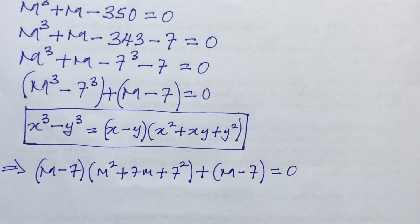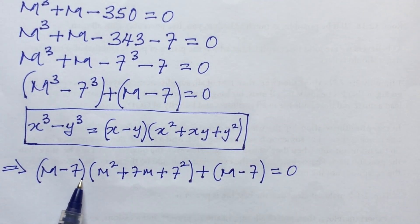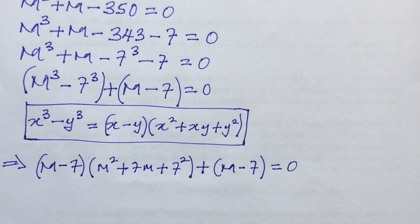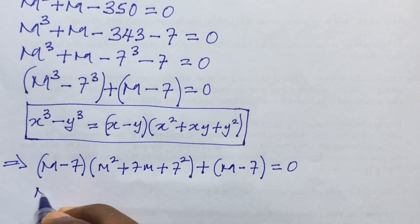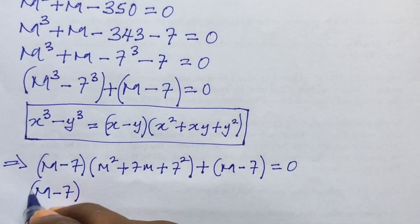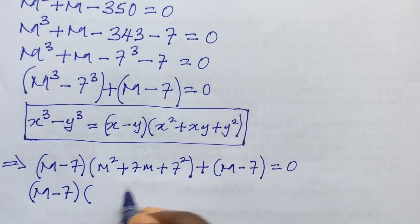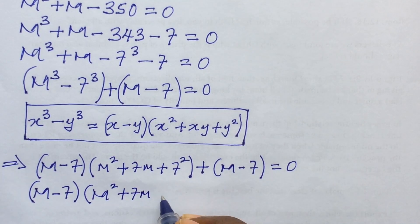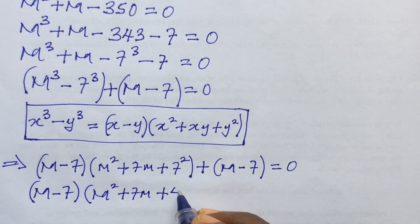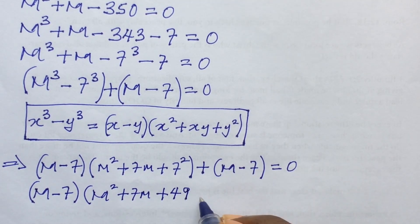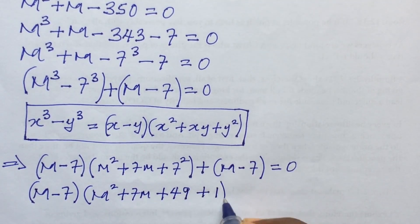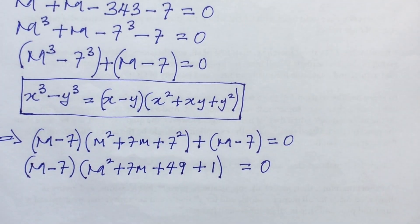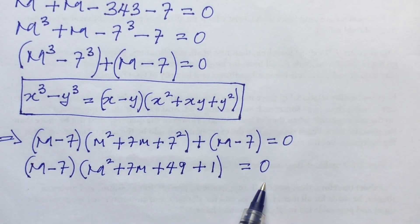We have (m - 7) in both terms, so we factor it out. This gives us (m - 7) times (m² + 7m + 49 + 1) equal to zero, which simplifies to (m - 7)(m² + 7m + 50) = 0.